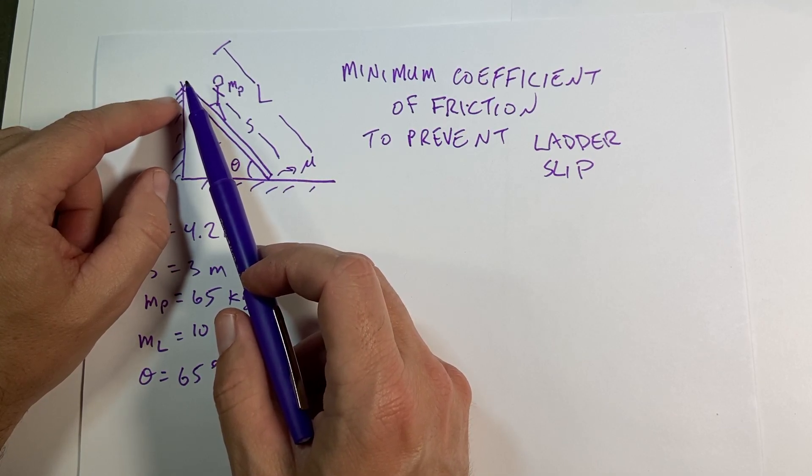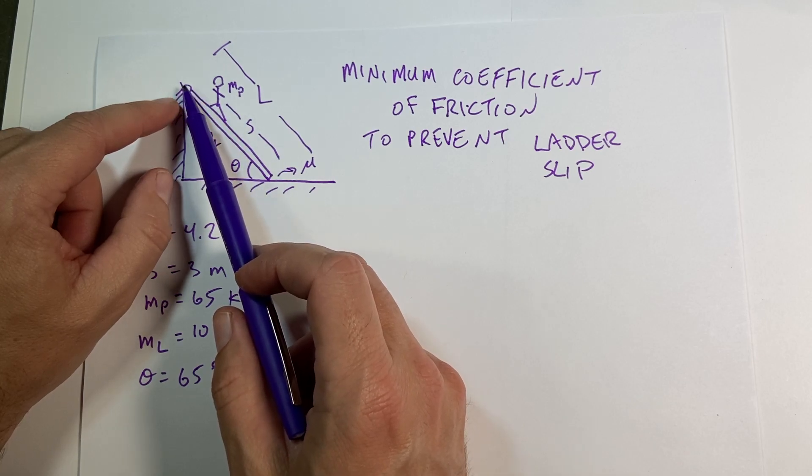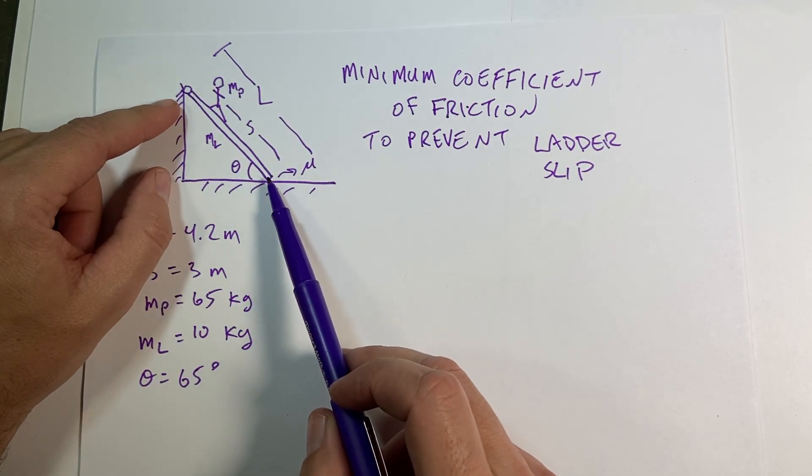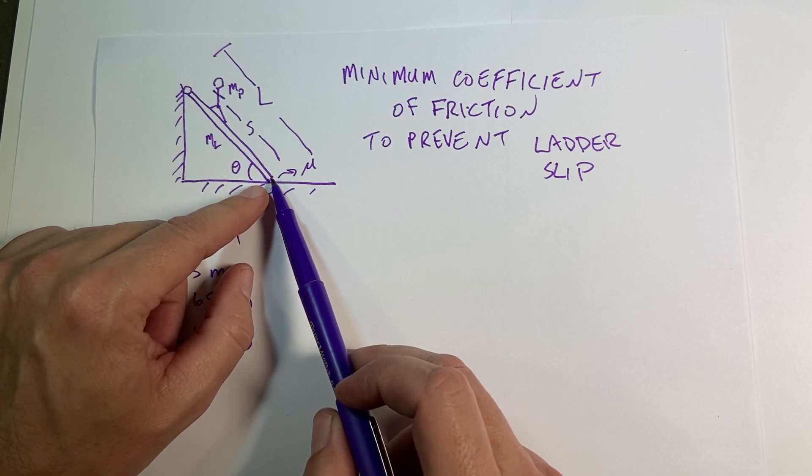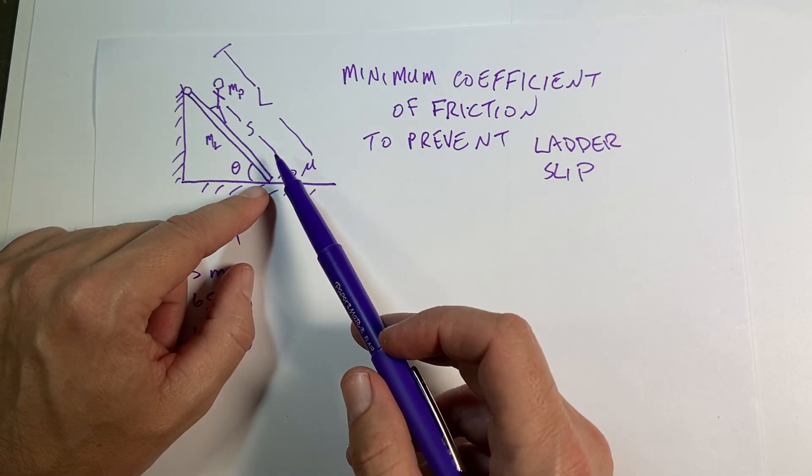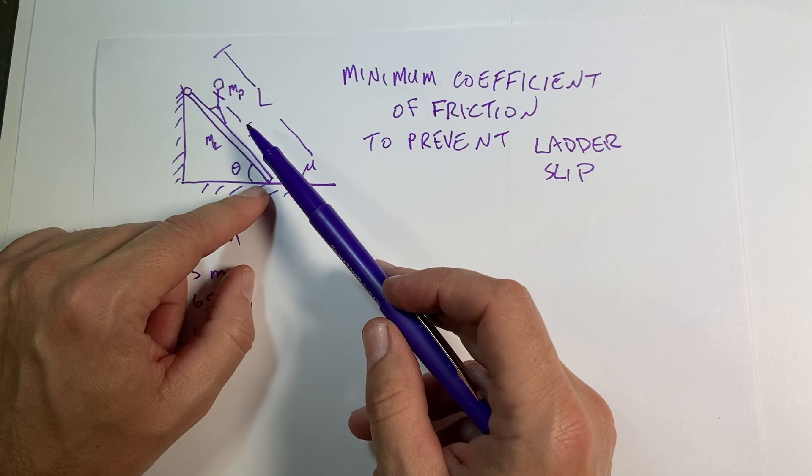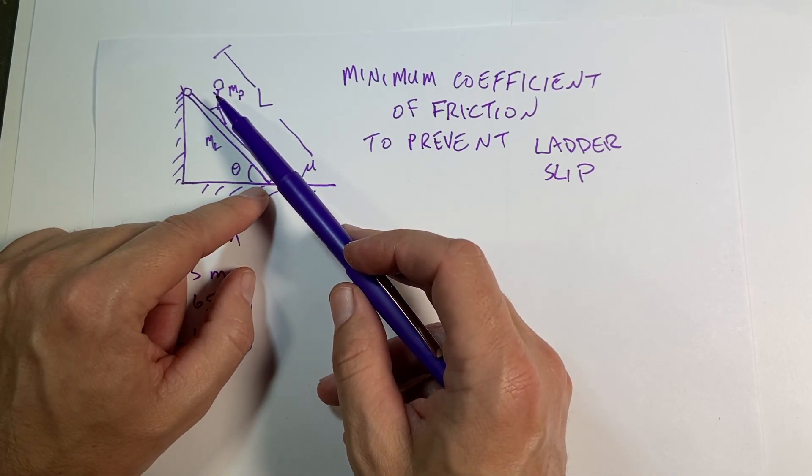So we can do one maybe later where there's not a wheel, but the wheel means that there's no friction up here. Now at the bottom of the ladder, it's on the floor, there is friction. And so on this ladder, there's a human, a person, and this person goes up the ladder.